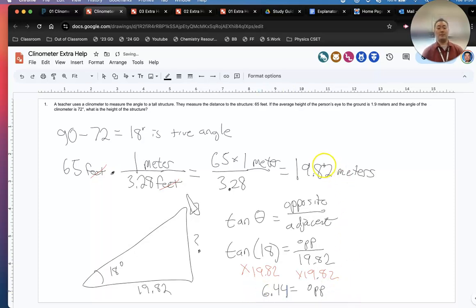Okay, so this is not our final answer. Because this triangle is only for the height of the clinometer. Under here is a person holding the clinometer, and that's 1.9 meters. So we have to include the person that's holding the clinometer.